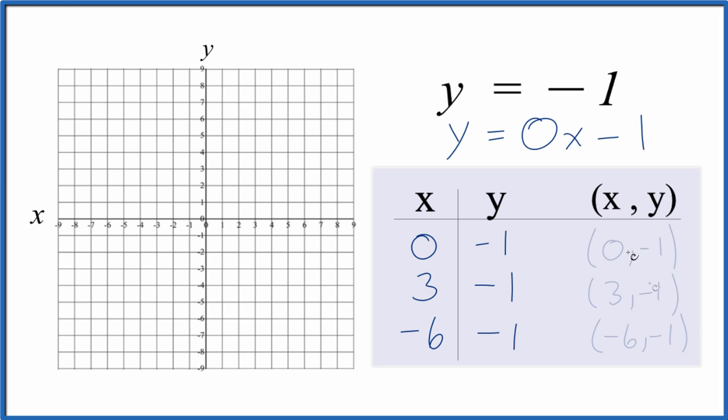So these are the points that we'll graph here with our table of values for the equation y equals negative 1. So x is 0, y is negative 1. Right there, that's our first point.